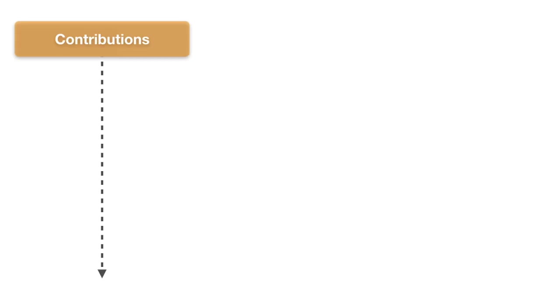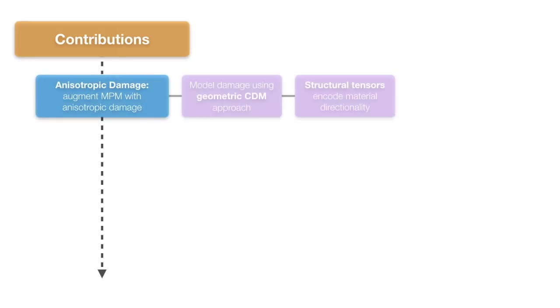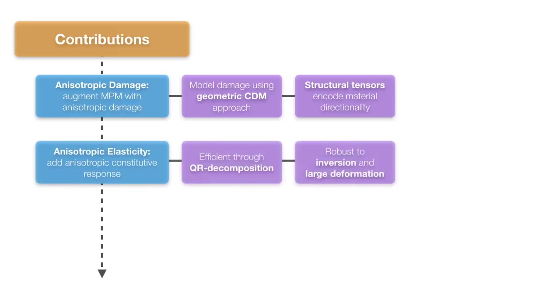AnisoMPM is composed of three key elements. The first is a geometric approach to modeling damage, paired with structural tensors to encode material directionality. The second is a novel QR decomposition-based anisotropic constitutive model that is robust to extreme topological changes.